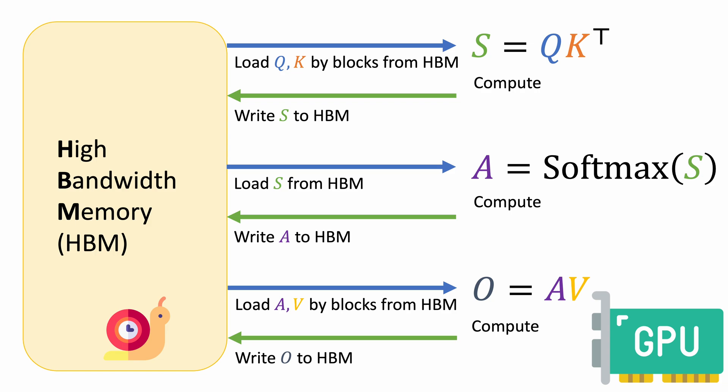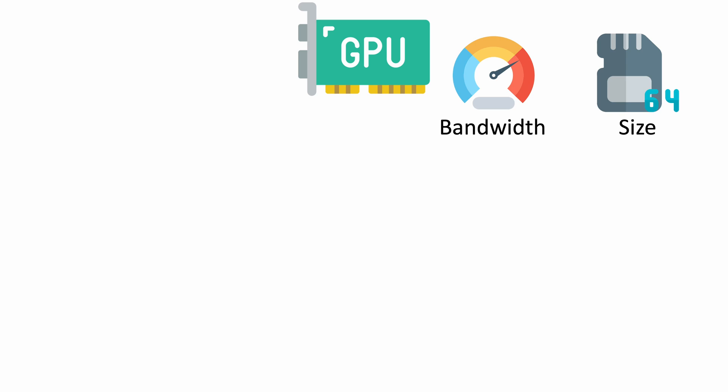As we can see, data frequently travels back and forth between the HBM and the GPU cores. This back-and-forth global memory access adds significant latency. So how can we speed this up? Let's examine the memory hierarchy, focusing on the bandwidth and the memory size. All computers have DRAM, it's large but slow in bandwidth.